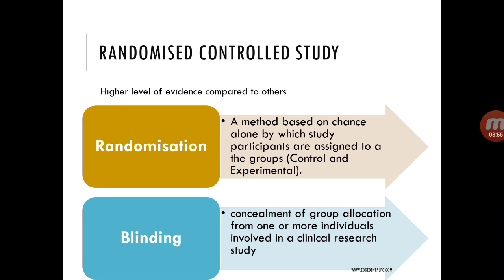Then we move on to the last study design: the randomized control trial. Here, the study variables are manipulated by the investigator, and hence it holds a higher level of evidence compared to other study designs. The two main terminologies in RCTs are randomization — considered to be the heart of an RCT, a method based on chance alone by which study participants are assigned to groups — and blinding, which is the concealment of group allocation from one or more individuals involved in the clinical research study.